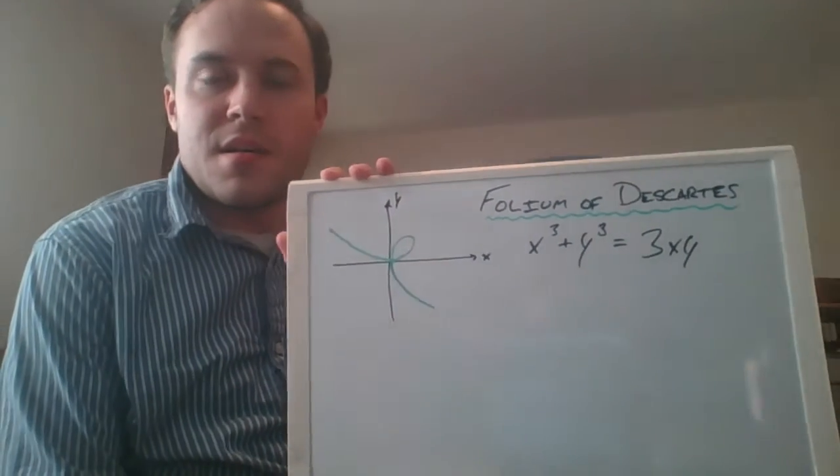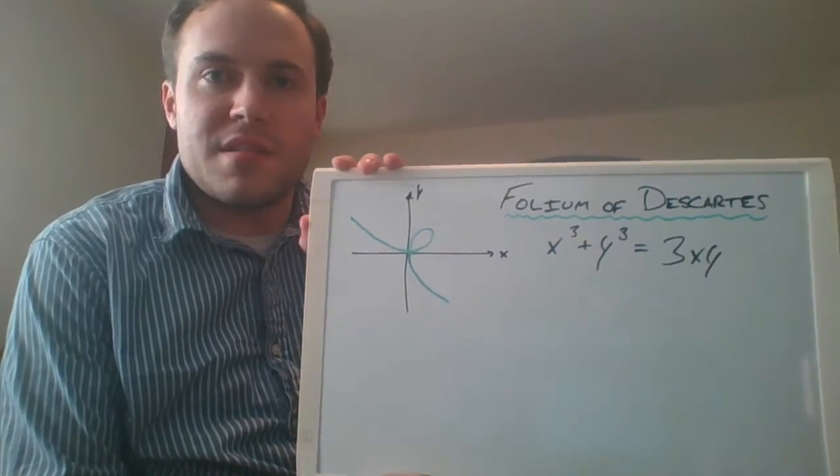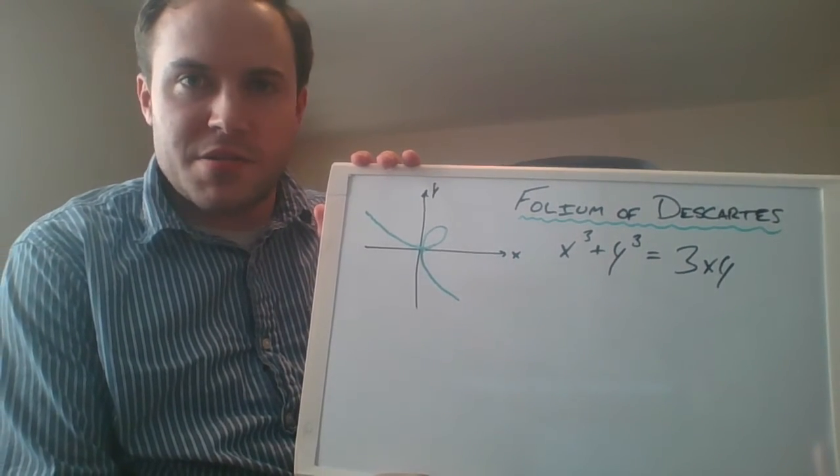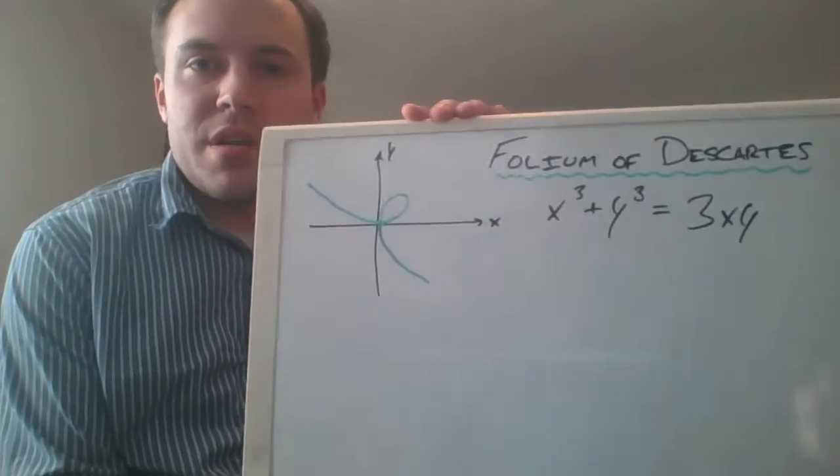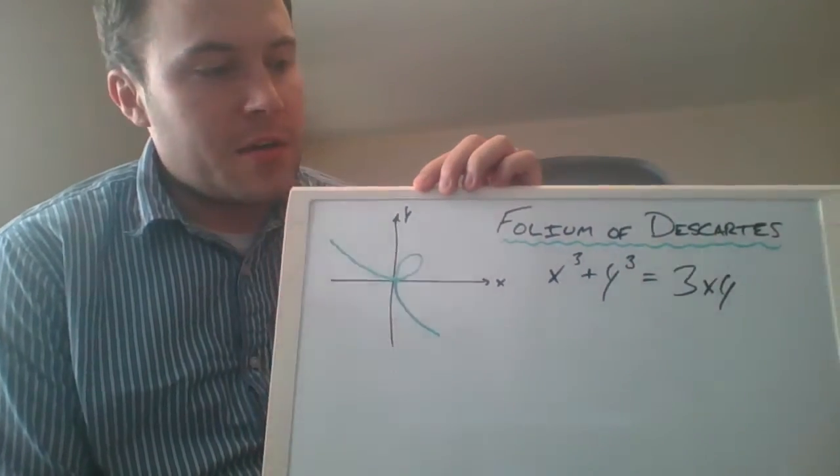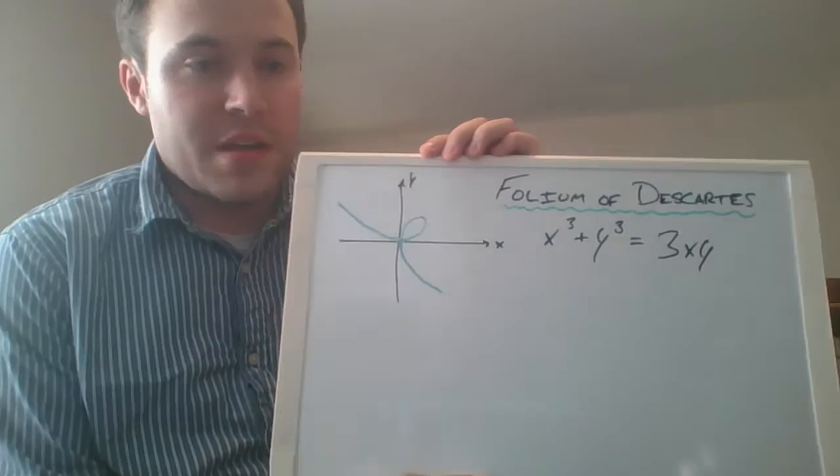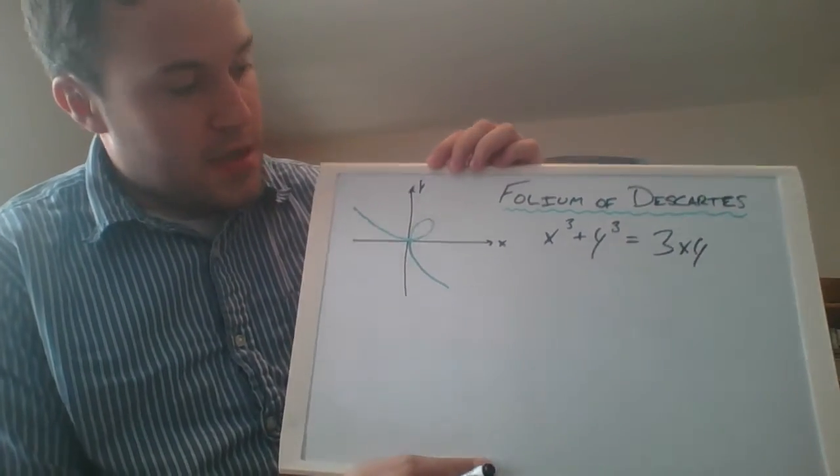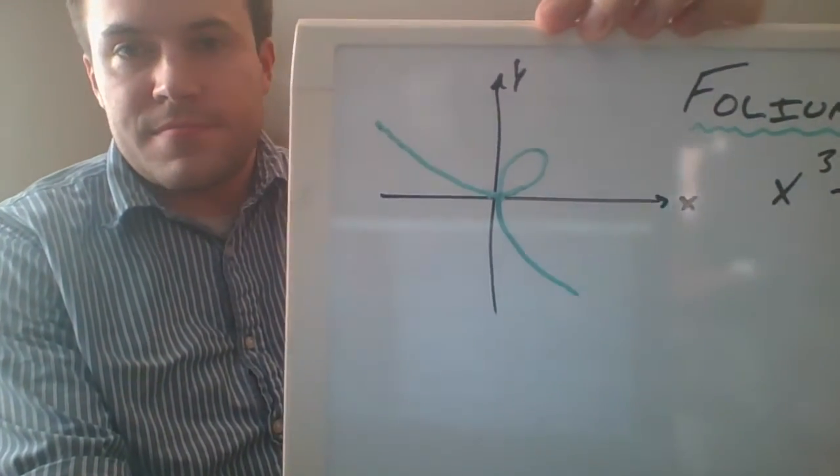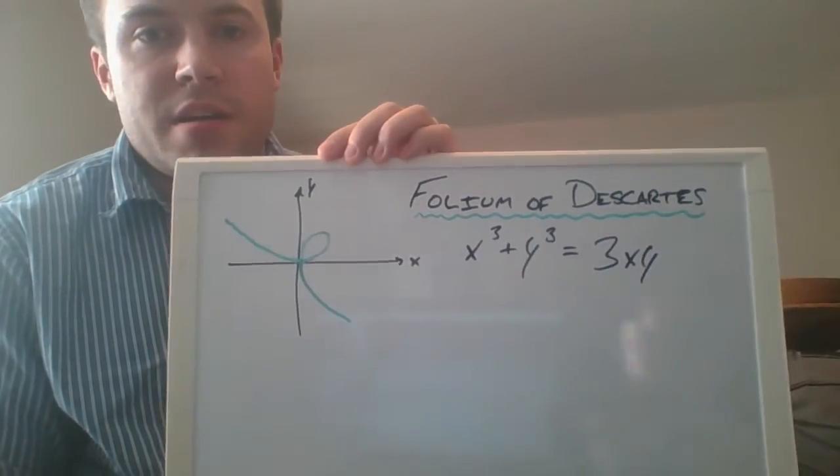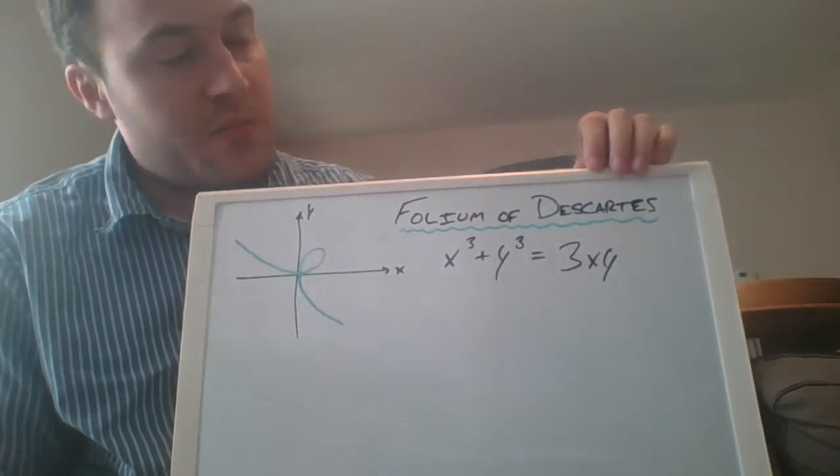I want to give you another example of an implicit differentiation type problem. We've got another really interesting curve here, this one's called the folium of Descartes. He's the guy who said 'I think therefore I am' and apparently he spent a lot of time thinking about this. So it's this funny little loopy curve like that.